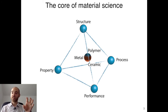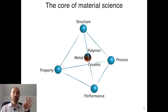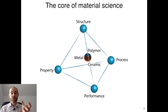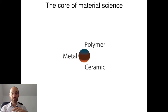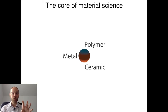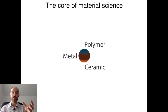By using processing we can change the structure of materials, which influences their properties and eventually changes their performance for a specific application — and everything is intertwined. At the core of this tetrahedron we have three different material classes: polymers, metals, and ceramics. This classification comes from very specific differences in the atomic structure of these materials. I want you to pause this video, take a break, and look around wherever you are.